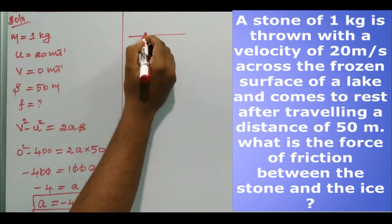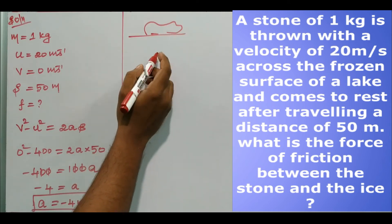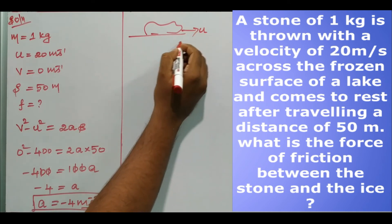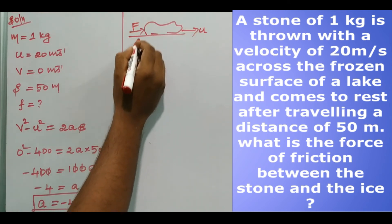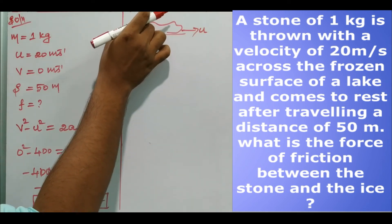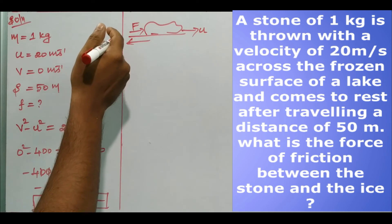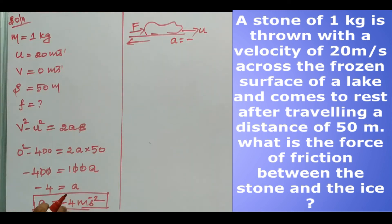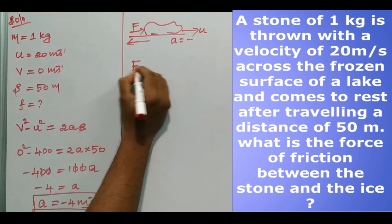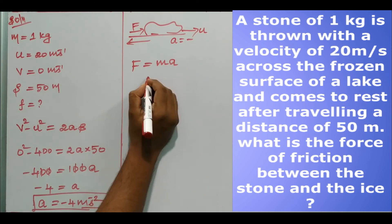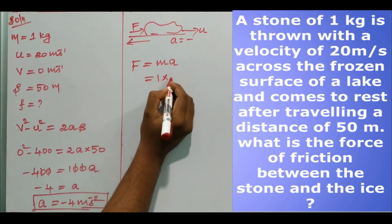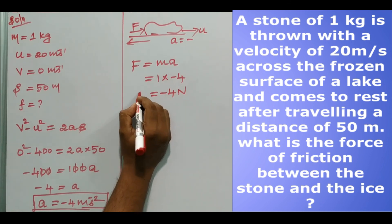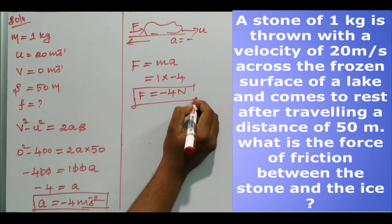We want to find out force. Imagine the stone on the surface — if we apply force in the forward direction, the stone moves forward. Friction force will act in the opposite direction, reducing the motion. So force equals friction force. Using F equals ma: F equals 1 into minus 4, so force of friction is minus 4 newton.